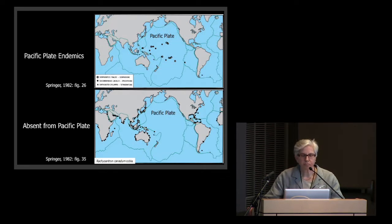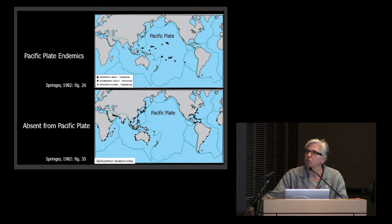This was clearly shown by my colleague Vic Springer in his monograph in 1982 on Pacific Plate endemics. In the map above, Vic has put in the distribution records for shore fish species that live solely on the Pacific Plate. That is the largest lithospheric plate on Earth. They're endemic to the plate. They live there and nowhere else on Earth.